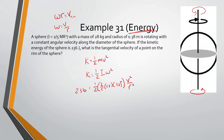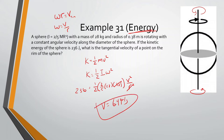Now with the r's cancelled, we do the math: 236 × 2 × 5 ÷ 2 ÷ 28, then take the square root, and we get velocity equal to 6.49 meters per second.